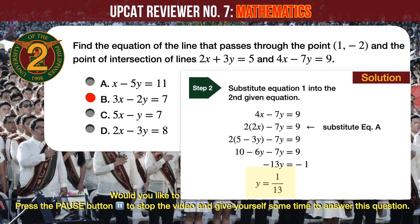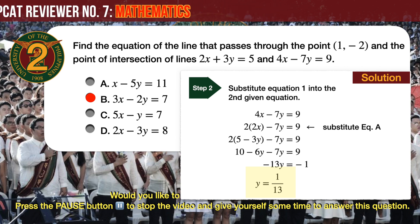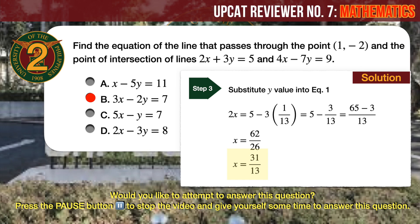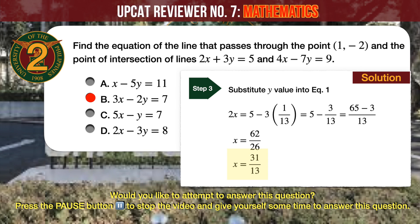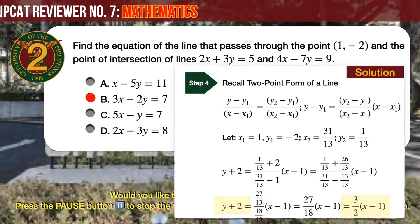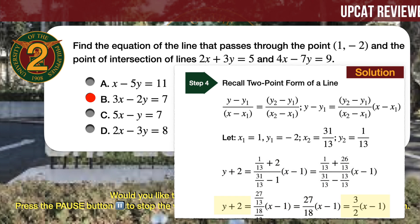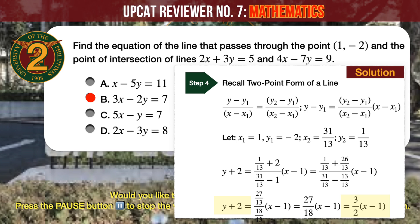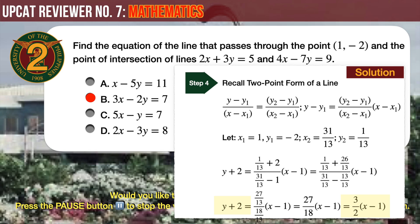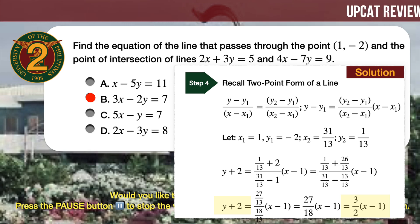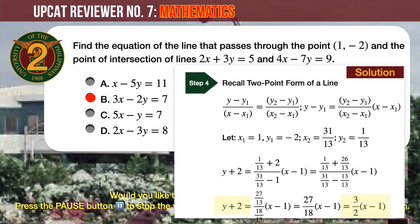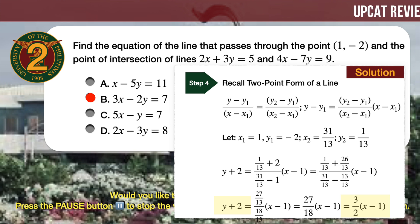Step 2: substitute equation A into the second given equation; we should arrive at y equals 1 over 13. Step 3: substitute the computed value of y back into equation 1 to compute for x; we should arrive at x equals 31 over 13. Step 4: with x and y known, use the two-point form of a line passing through (x1, y1) and (x2, y2). Let x1 equals 1 and y1 equals minus 2 be the given point, and x2, y2 be the intersection values. Substituting into the two-point form, after simplifying we arrive at y plus 2 equals 3/2 times the quantity x minus 1.